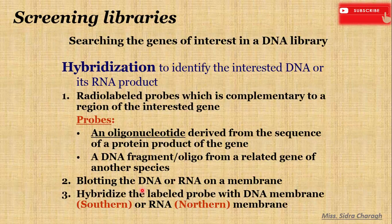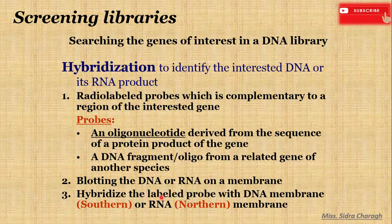First, we discuss nucleic acid hybridization. Hybridization is performed to identify the interested DNA or its RNA product. We use radio-labeled probes that are complementary to the region of the interested gene. Probes are oligonucleotide primers derived from the sequence of a protein product of the gene, or a DNA fragment from a related gene of another species. Then we blot the DNA and RNA on a membrane and hybridize the labeled probe with the DNA or RNA membrane.